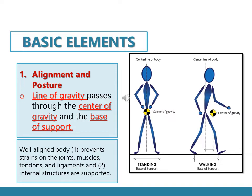Proper body alignment and posture is very important to promote optimal balance whether the person is standing, sitting, walking, or lying down. Looking at the photo, there are three important points: the center line of the body starts from the head, passes through the center of gravity between the trunks, and continues down to the base of support. Alignment is maintained when the line of gravity passes through the center of gravity and through the base of support.